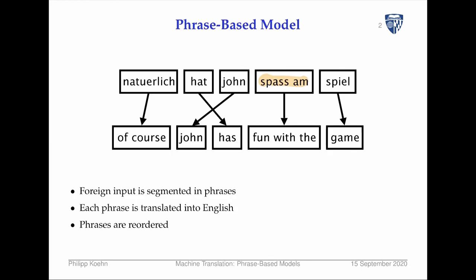Here you see a couple of examples of where phrase-based models offer nice solutions. We have the word 'natürlich,' which translates as 'of course' — one word moving into two words. If you think about this in a word-based model, it's hard to reproduce. Does 'of' get translated as 'natürlich'? Is 'course' also a translation of 'natürlich'? Both are not really correct — 'course' usually means something else and 'of' is incredibly ambiguous.